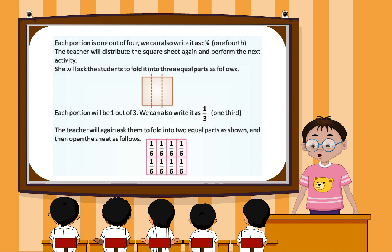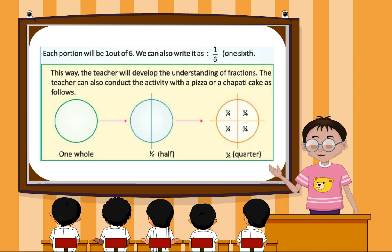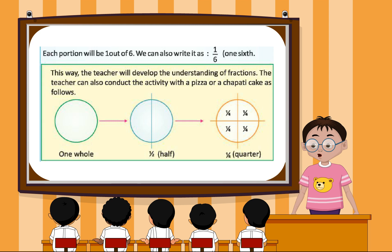The teacher will again ask them to fold into two equal parts as shown and then open the sheet. Each portion will be 1 out of 6. We can also write it as 1 by 6 or 1 sixth.